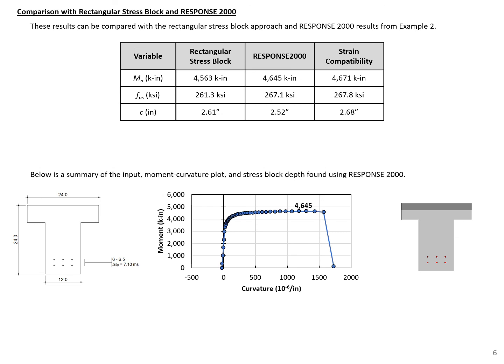Finally, we can compare our results with the strain compatibility approach with the results that we got from example 2 using the rectangular stress block approach and our results from response 2,000. So you can see here our nominal moments are within 5% or so. Our F sub ps is again close to the response value, so closer to the response value than we had with the rectangular stress block.